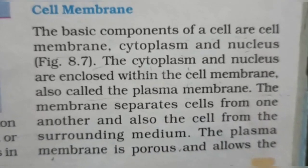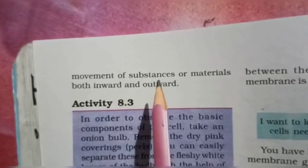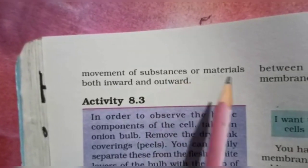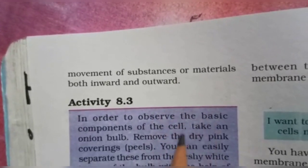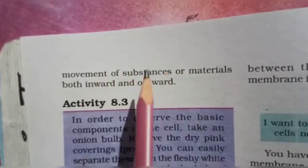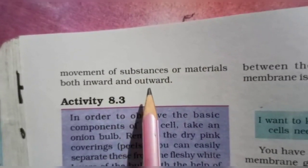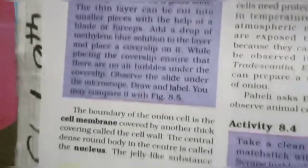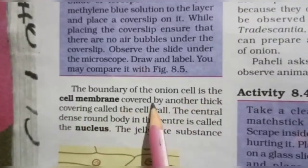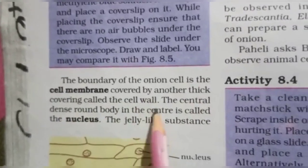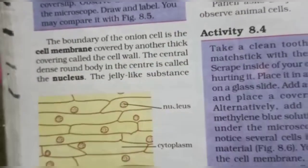The plasma membrane allows the movement of substances in and out of the cell. The boundary of the onion cell is the cell membrane, which is covered by another thick covering called the cell wall. The cell wall is shown here in the diagram.